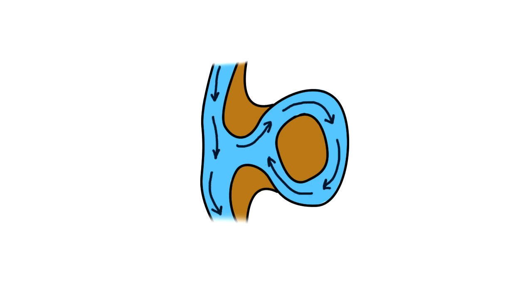The connected meander is now a cutoff. Deposition eventually separates the cutoff from the main channel, leaving behind an oxbow lake. The water becomes stagnant, and in time, the lake gradually silts up, becoming a crescent-shaped stretch of marsh, called a meander scar.